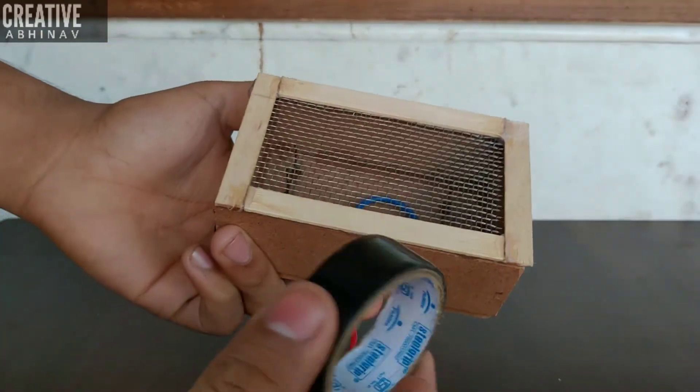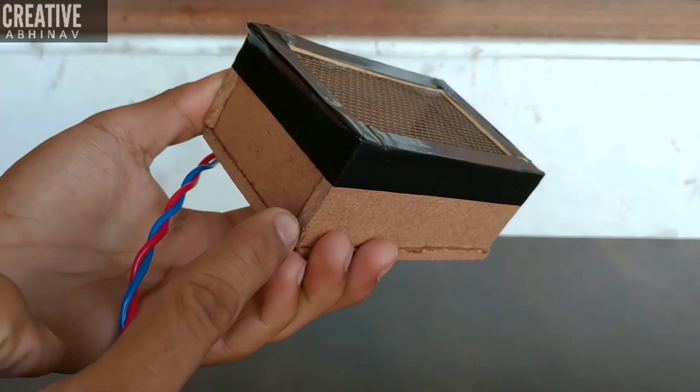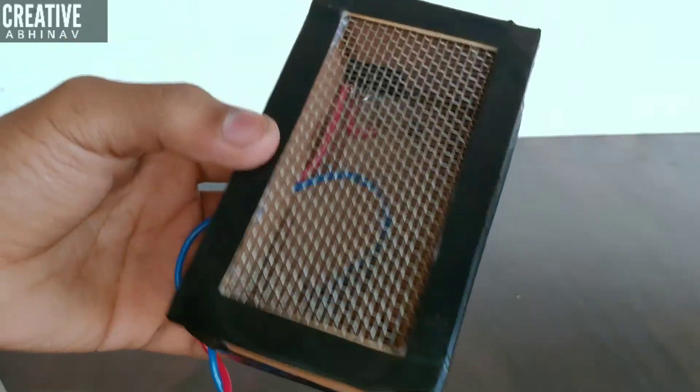Now take an electric tape, then we have to cover our side parts of the heater like this.